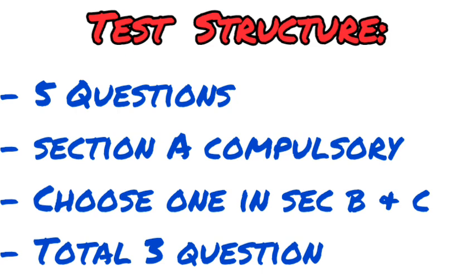Section A is made up of only one question — question one — and it is compulsory. The confusion may be that the questions in question one look different because they come in different formats: multiple choice, matching column, filling in a missing word, or identifying a concept or term. They are not different questions; they are 1.1, 1.2, and 1.3 — they just happen to be in different formats. Section A is always question one and it is compulsory.